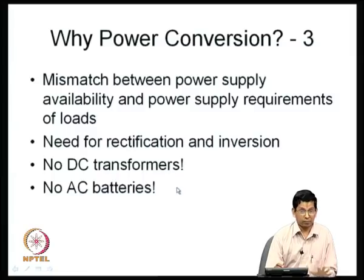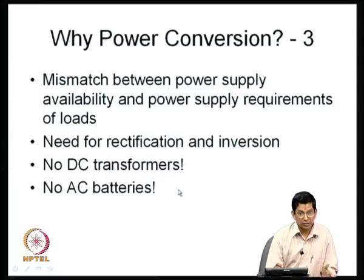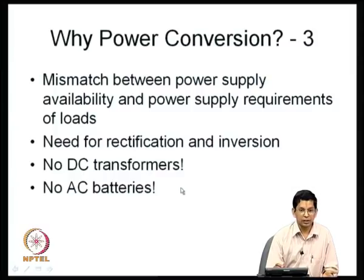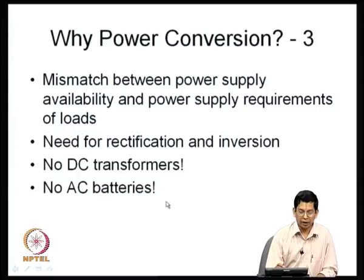To quote a colleague: one reason why you need power electronics is that you do not have DC transformers and AC batteries. In a crude sense, power electronics tries to make up for the non-availability of DC transformers and AC batteries. The way a power converter achieves a reduction or increase in DC voltage — bucking and boosting — is quite different from a transformer; there is no magnetic circuit. We use electronic devices and switching action, but power electronics does help us step down or step up DC voltages.